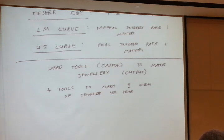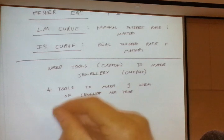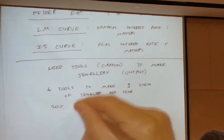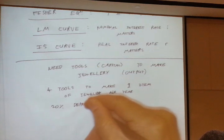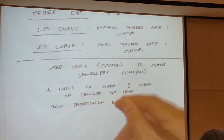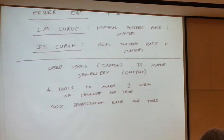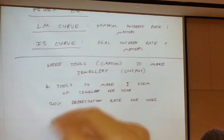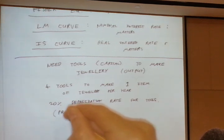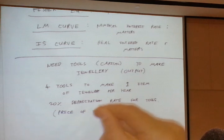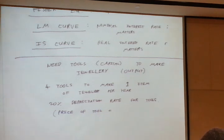So you need four tools to make one item of jewelry per year. Okay, not a very productive craftsman, but these numbers are just for simplicity. Let's suppose the tools depreciate. So capital, of course, is not something that's going to be around forever. If you're using it actually to make things, it's probably going to wear out. So let's assume a 20% depreciation rate of the tools.